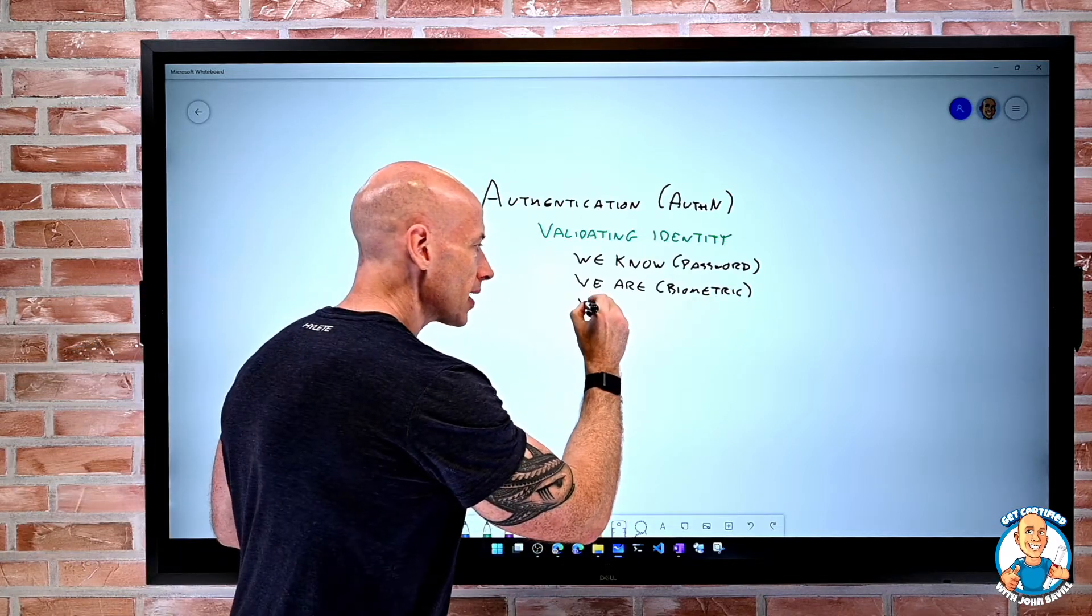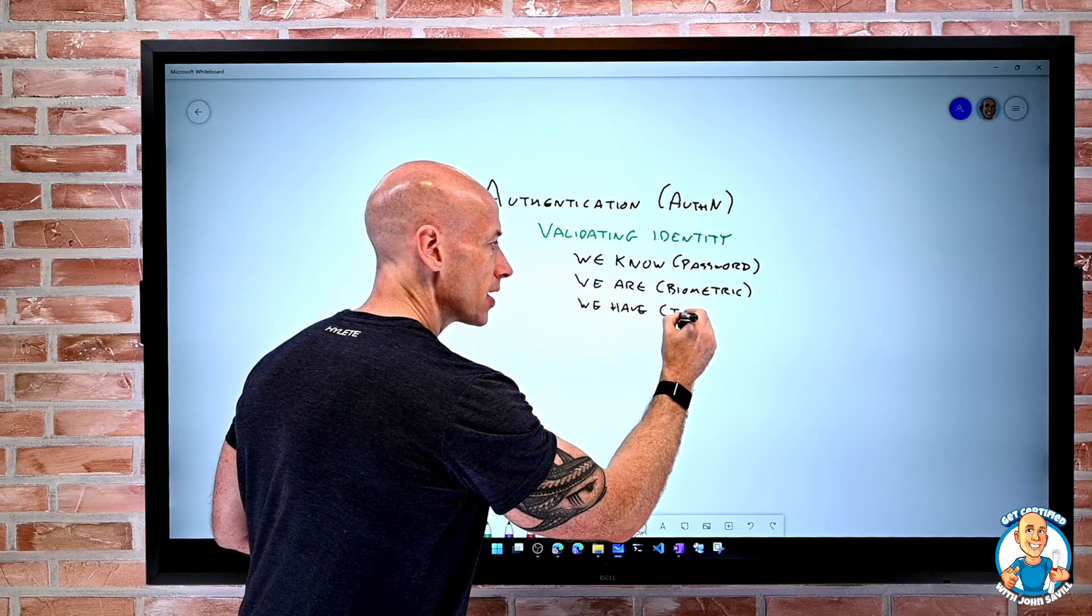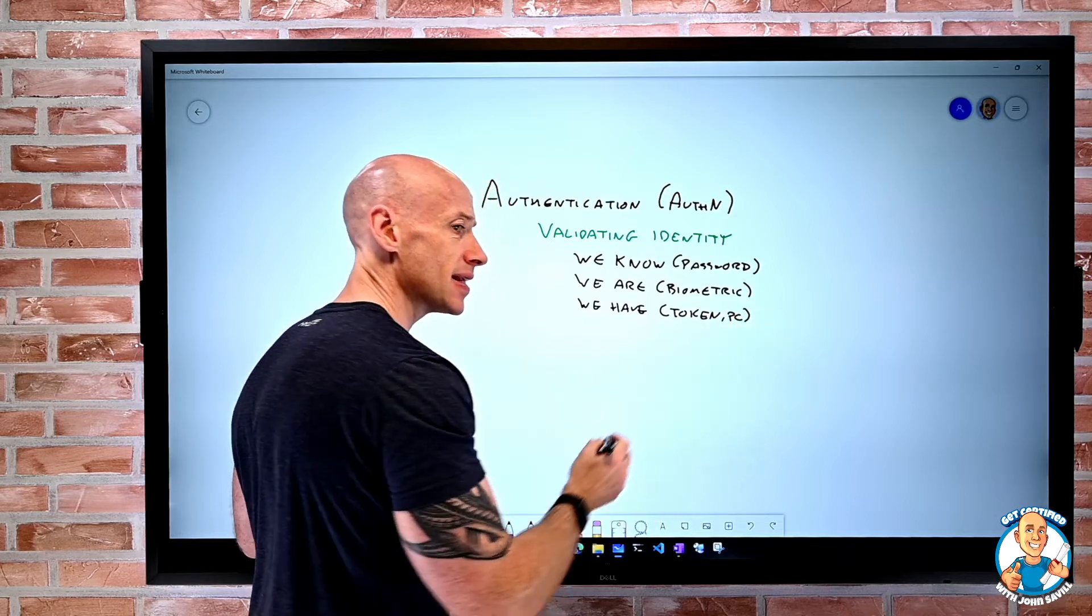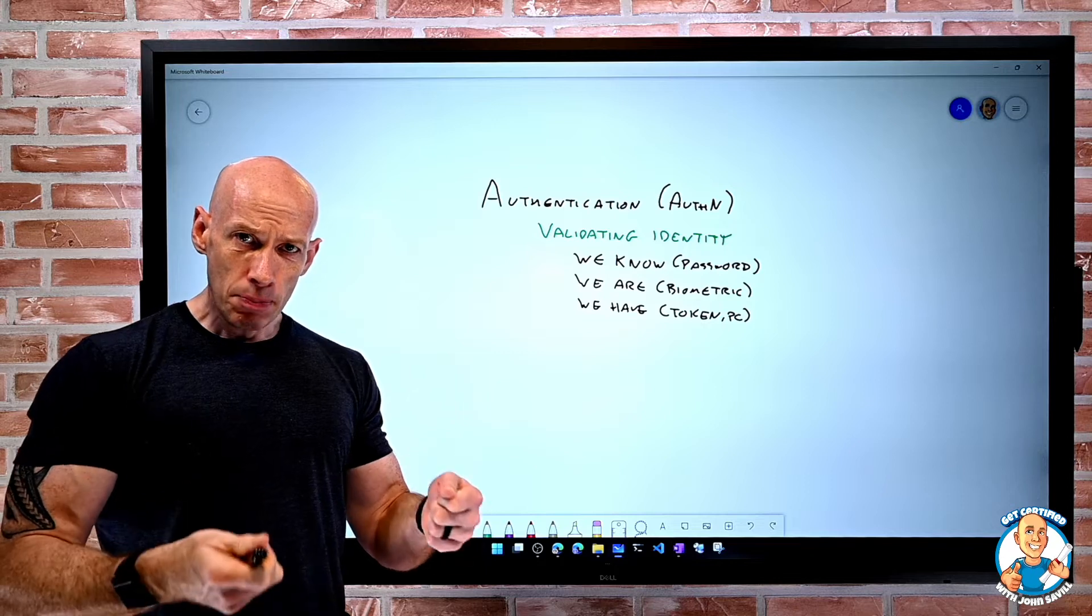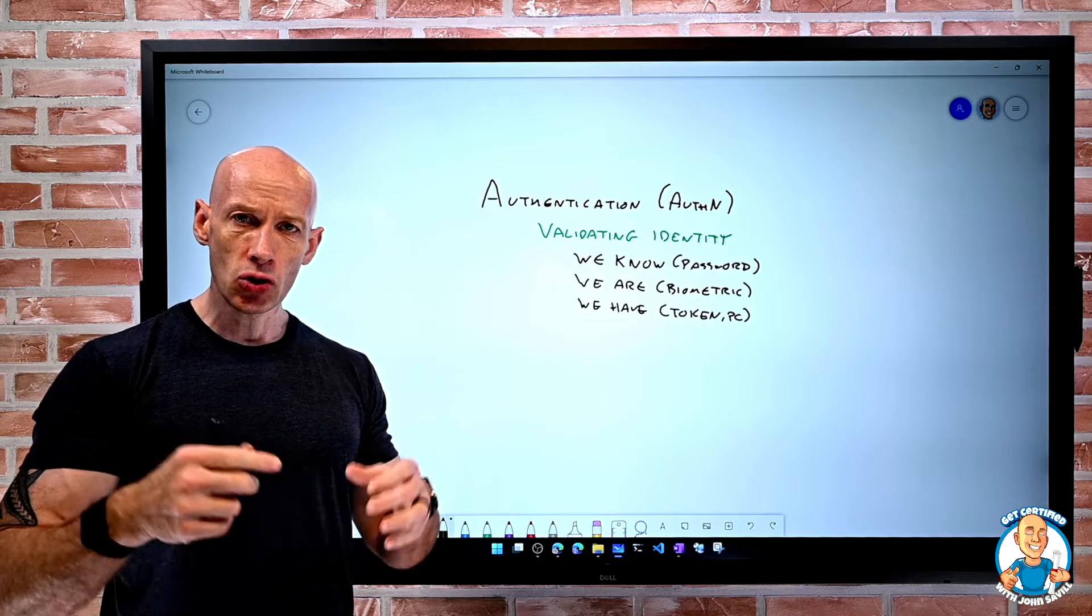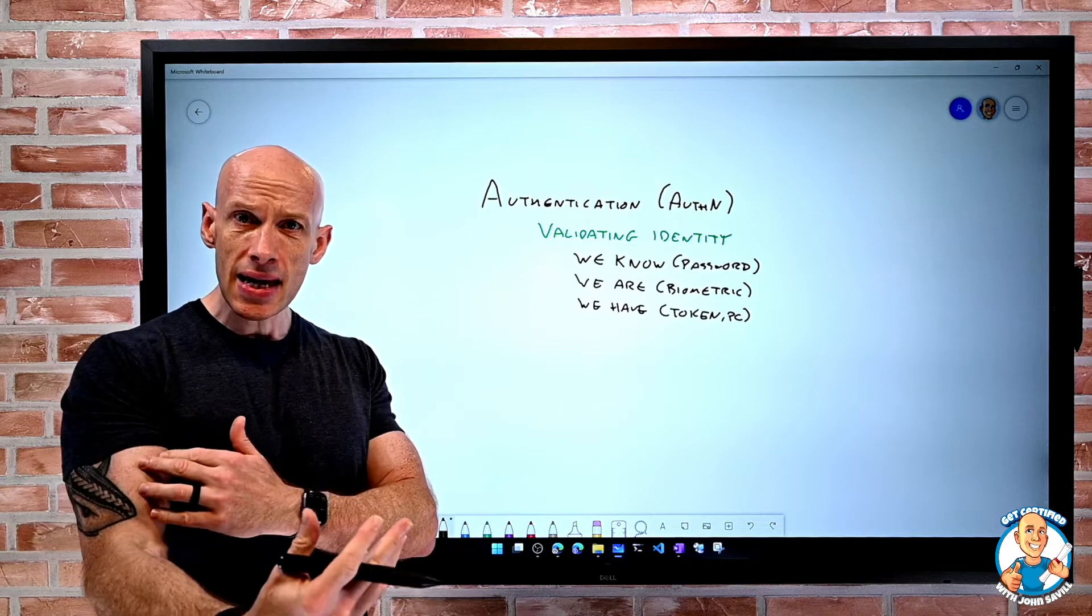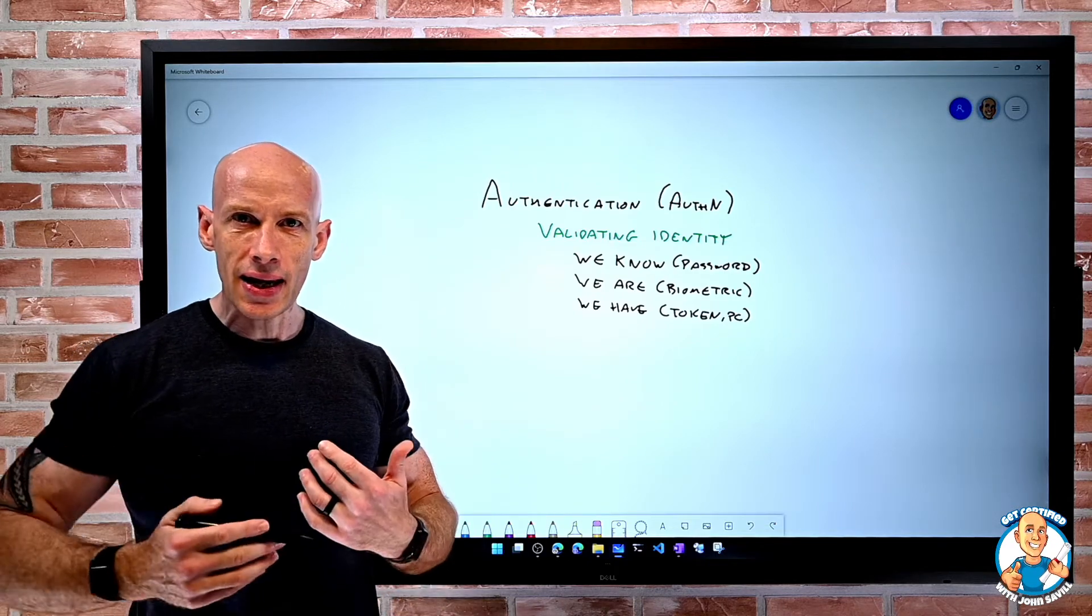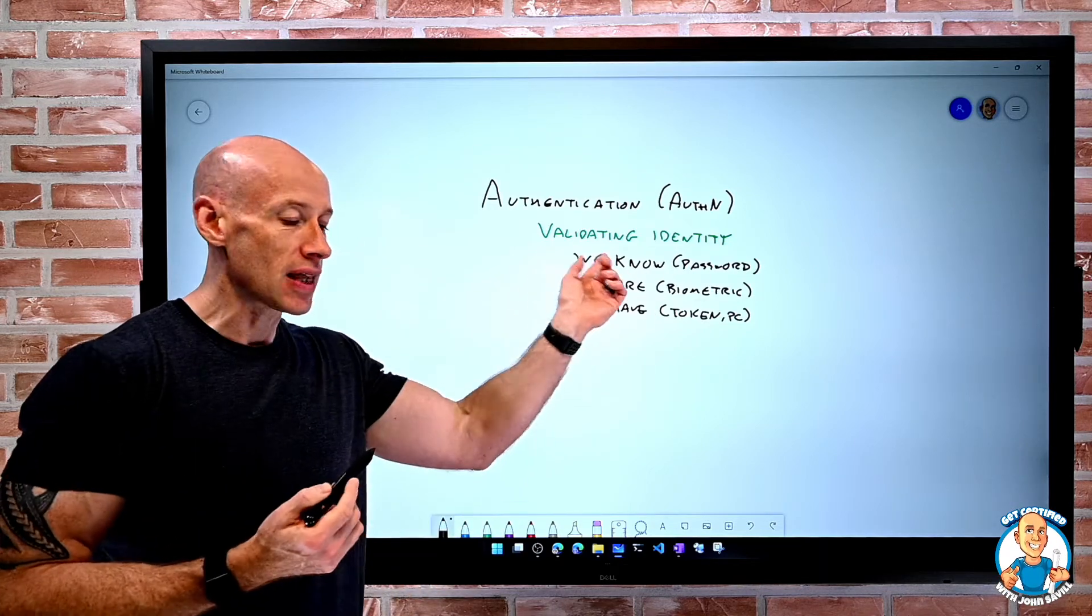It could be something we have. This could be some kind of token. It could also be our PC itself. We hear about things like Hello for Business, which is part of this trusted platform module in our laptop or computer that has a key known only to that machine. Maybe we unlock that key with a biometric or maybe a pin, which is something we know as well.